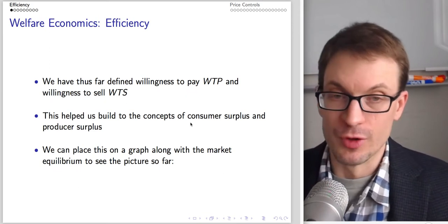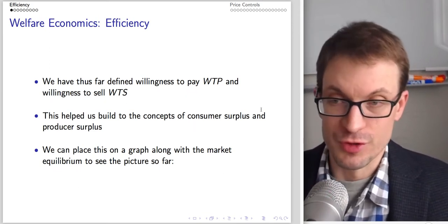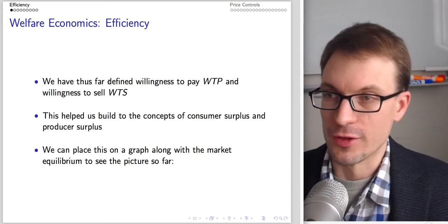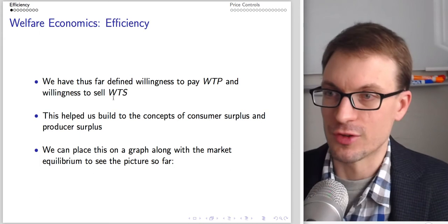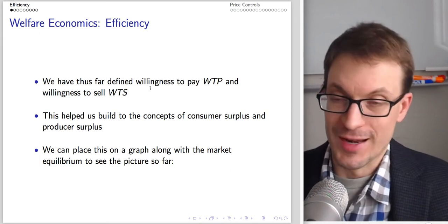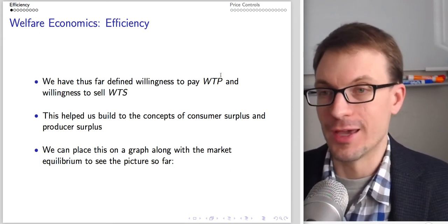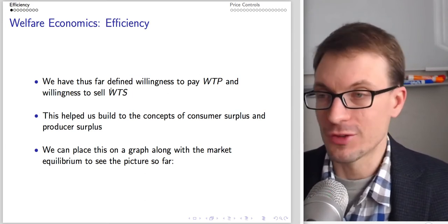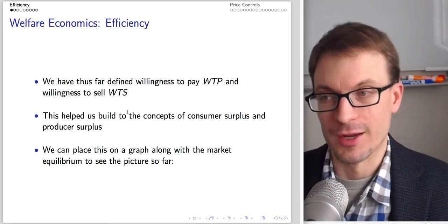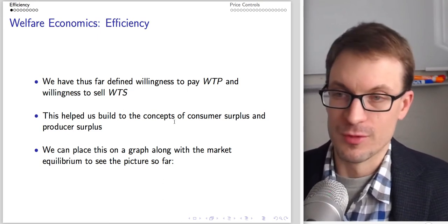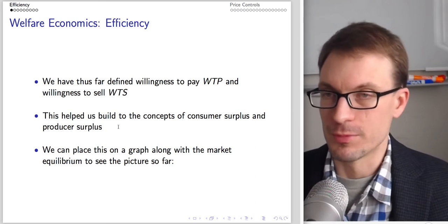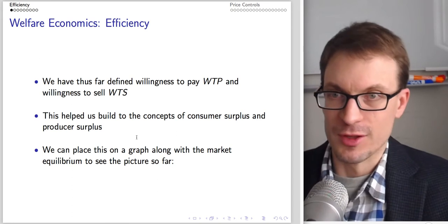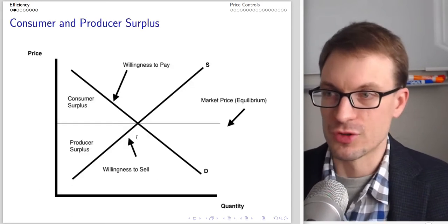So far in the lecture series we've defined consumers' willingness to pay (WTP) and sellers' willingness to sell (WTS). The willingness to pay is representable by the height of the demand curve, and the willingness to sell or marginal cost is representable by the height of the supply curve. This allowed us to build the concepts of consumer surplus and producer surplus, which we can put on a graph.